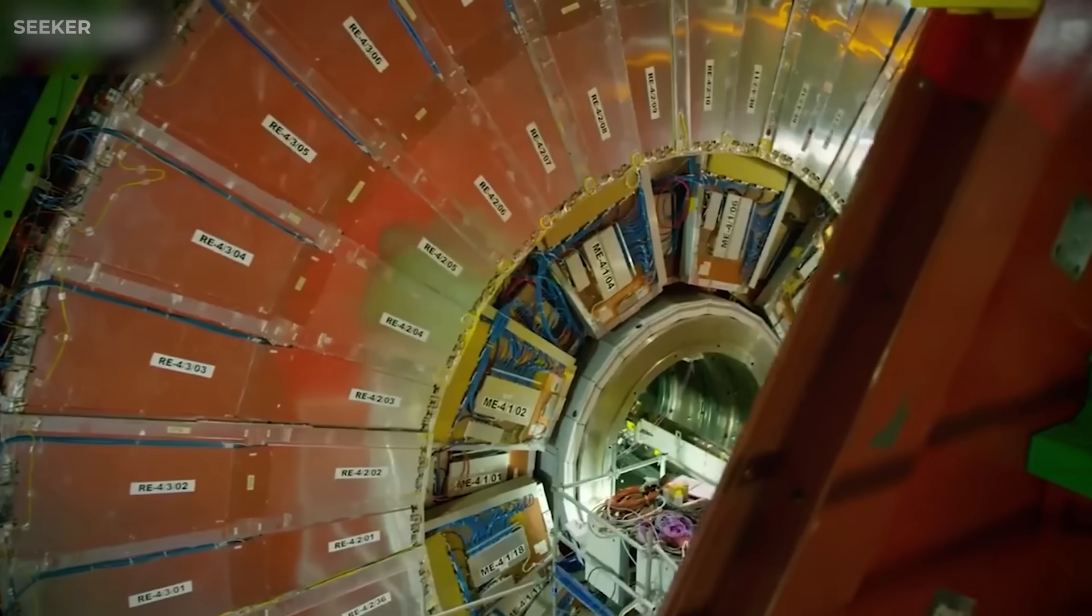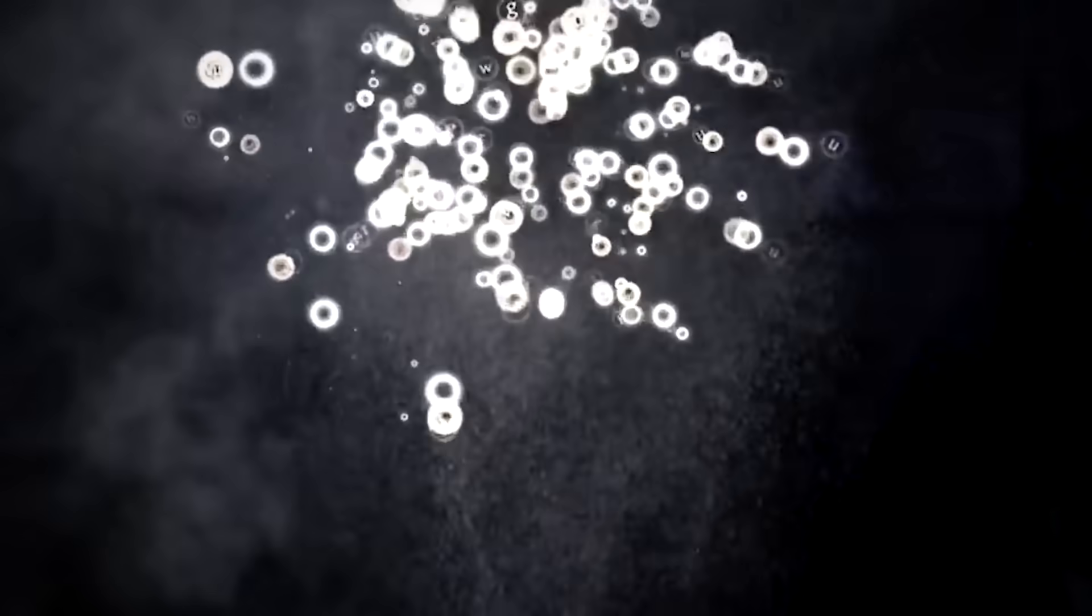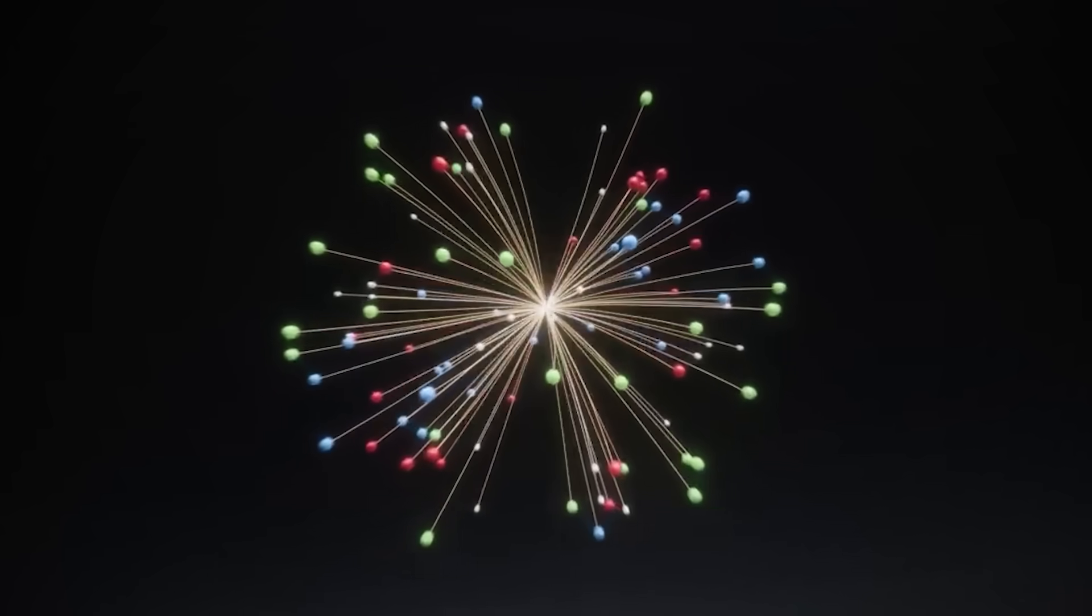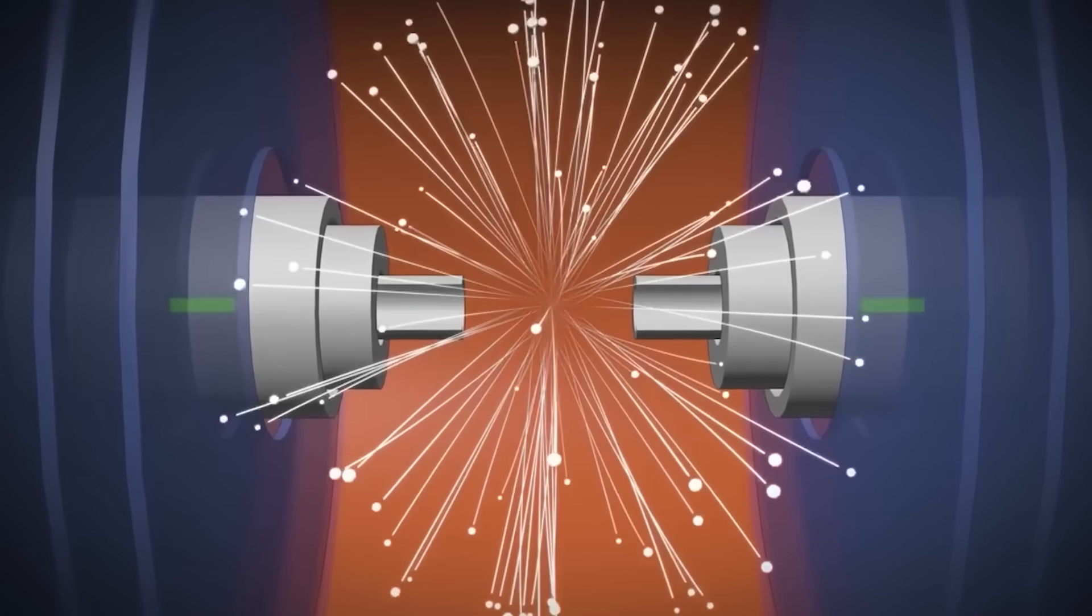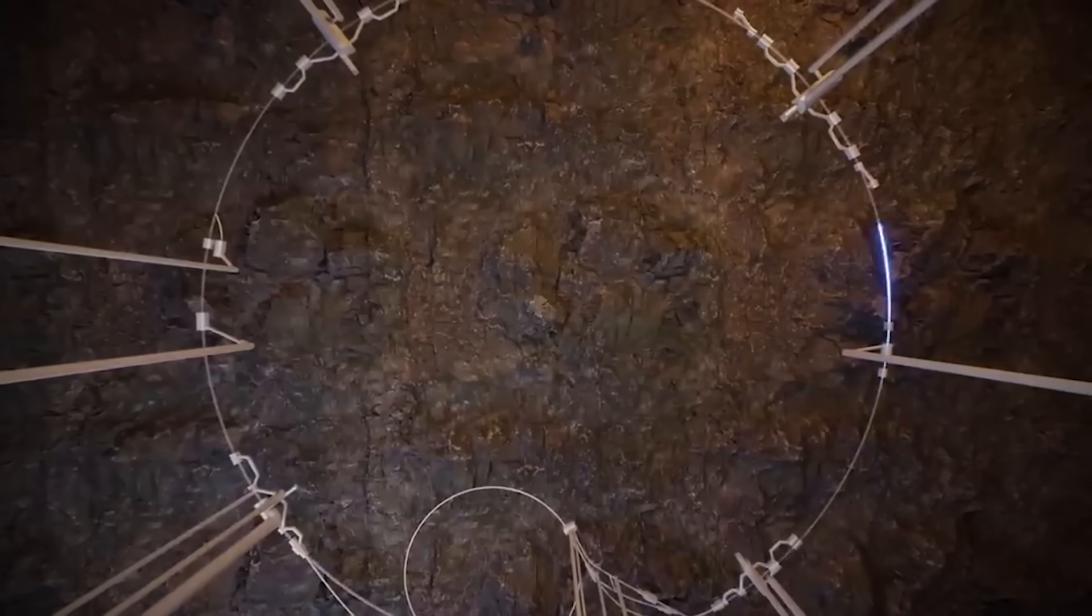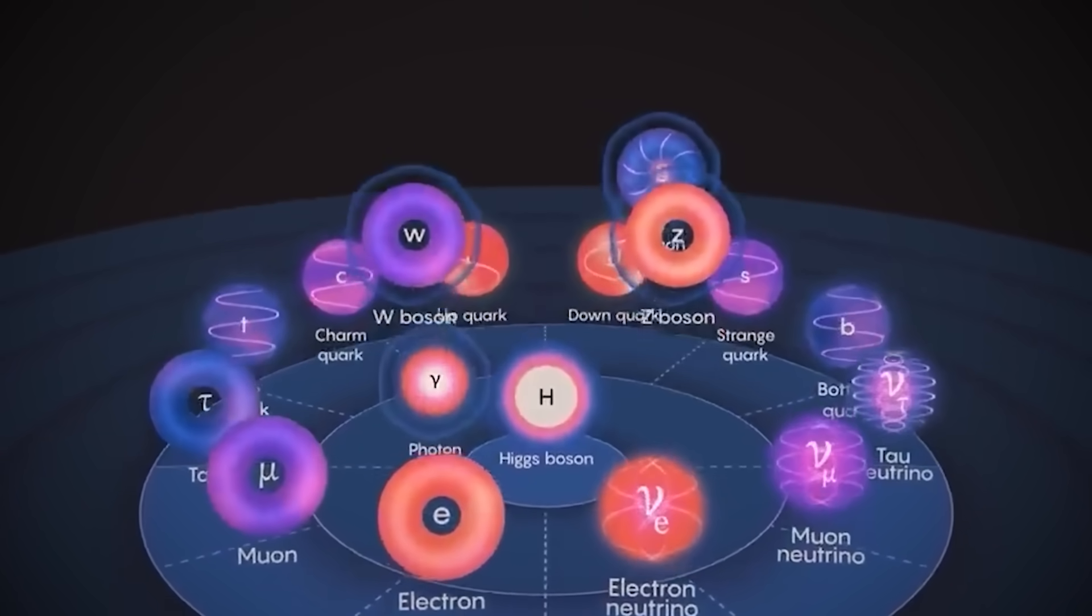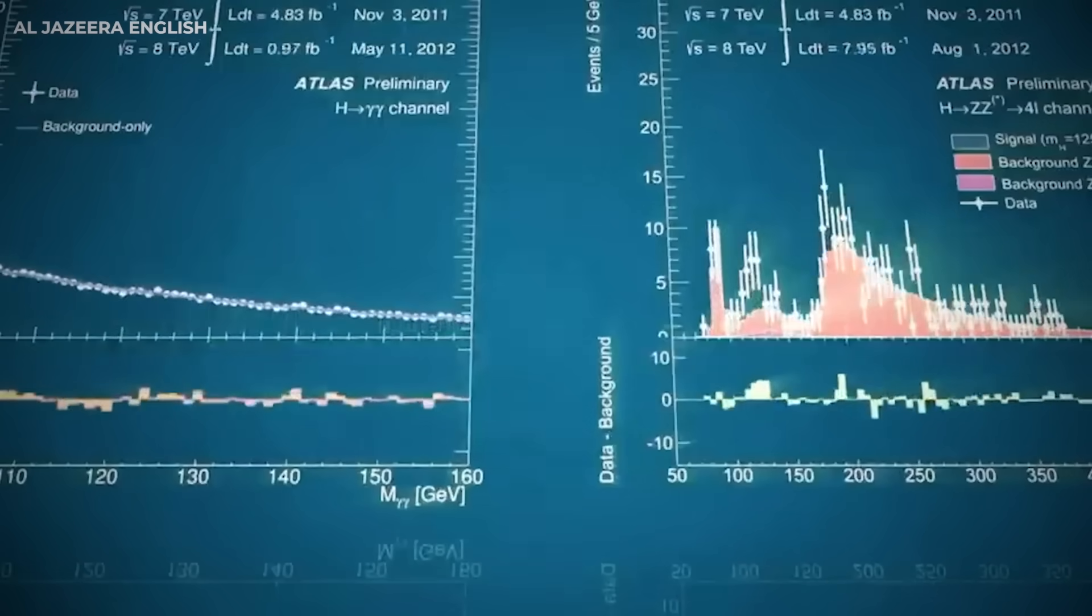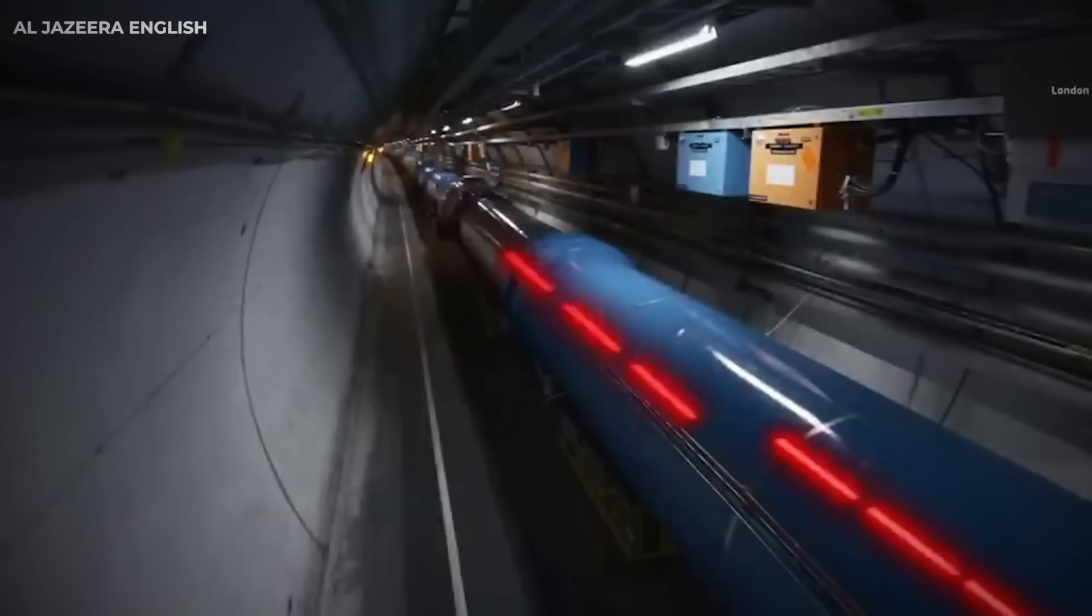Then there's CERN's lesser known AWAKE experiment. While the public focuses on the Large Hadron Collider, this plasma wakefield accelerator creates some of the strongest electromagnetic gradients ever achieved. Scientists can now manipulate particles with such precision that they're effectively warping spacetime in miniature, opening pathways to technologies that could one day manipulate gravity or electromagnetic fields in ways we've only imagined. Even CERN's neutrino research has applications beyond pure science. The techniques developed to track these ghost particles are now being explored for monitoring nuclear facilities, mapping Earth's interior, and even developing new energy sources that could revolutionize power generation.